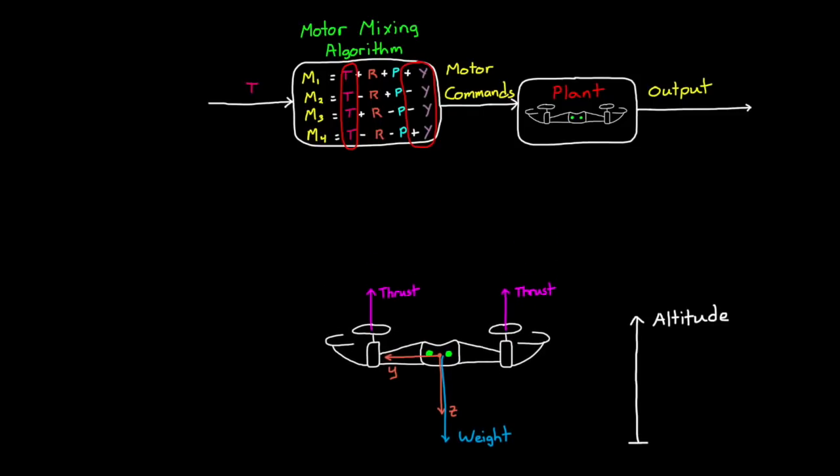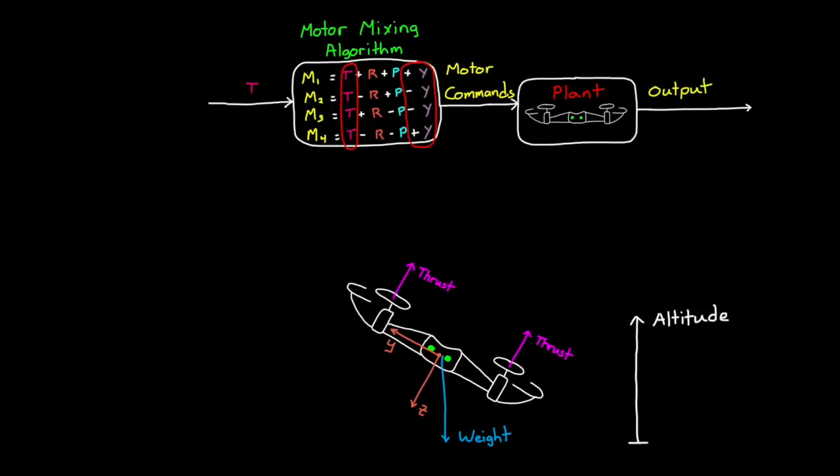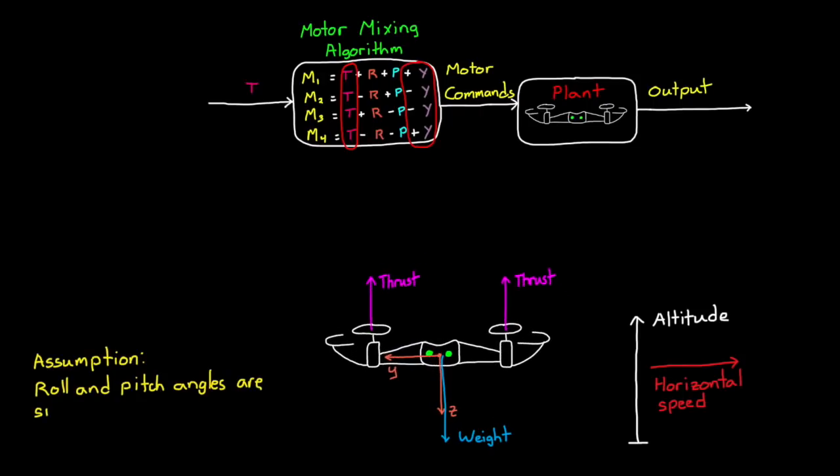However, if our drone is flying at a steep pitch or roll angle, then increasing thrust is coupled to both altitude rate and horizontal speed. Therefore, if we're building a controller for a racing drone that's likely to fly at extreme roll and pitch angles, then we need to take this coupling into account. However, for our simple hover controller, I'm just going to assume that the roll and pitch angles are always really small. In this way, changing the thrust only meaningfully impacts altitude rate and nothing else. So with this information, we can start our control design.